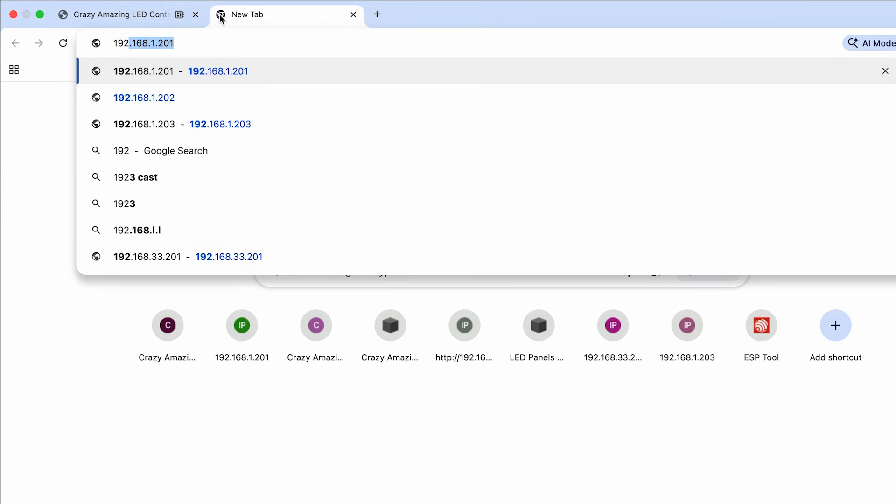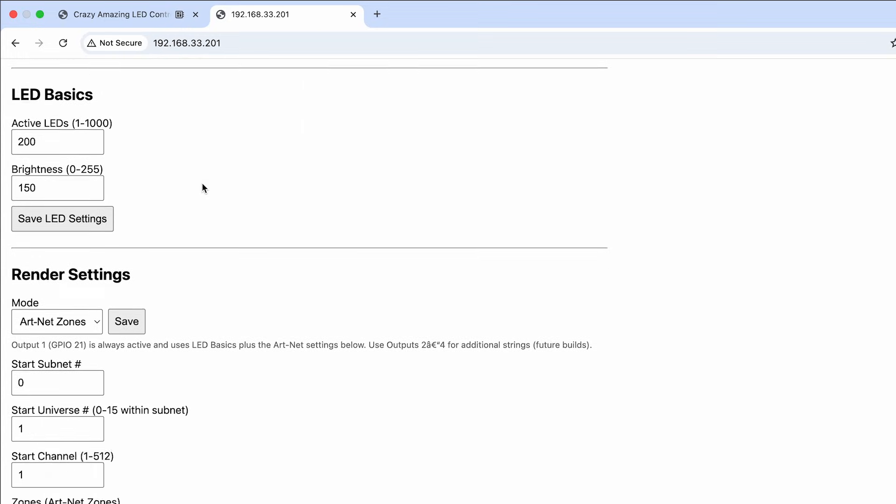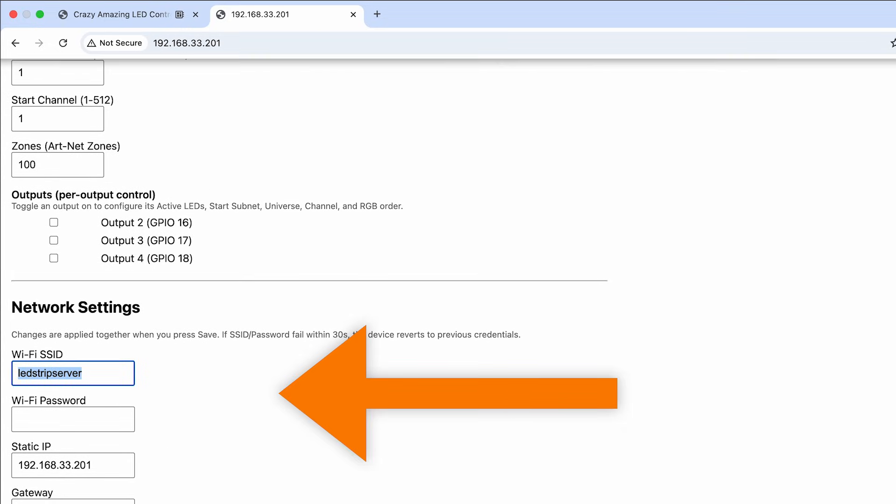Now that the board is connected to the Wi-Fi, connect to the board using the configured IP address. In the future, if you need to change the SSID or IP address information, you can do that from the device IP address over the network. The USB method exists as a failsafe to make sure we always have access to the device if you lose access to that network.